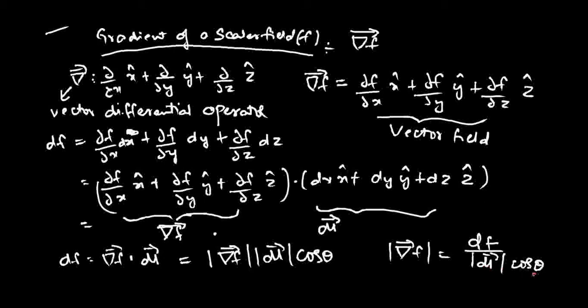Can you tell me what the value of theta should be such that |del F| is maximum? If this has to be maximum, the denominator should be minimum, so theta should be equal to zero. When theta equals zero, the magnitude of the gradient of the scalar function is maximum. So |del F| equals dF/dl at its maximum.